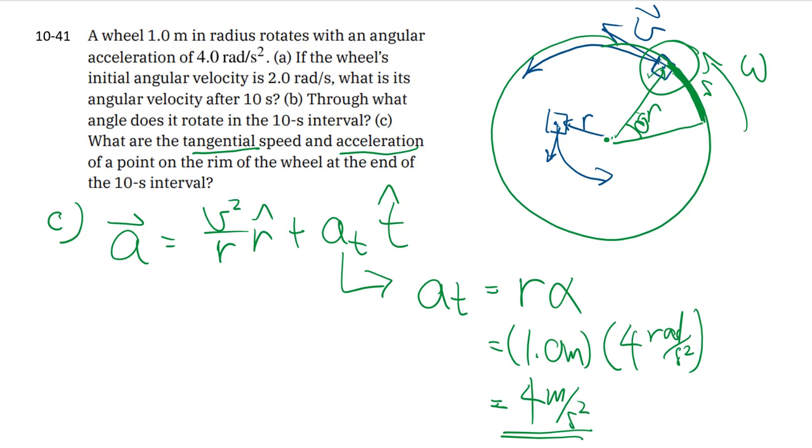So hopefully this gives you a nice introduction to rotational kinematics and see how it relates very closely to all the kinematics we know. And then for a particular point in the body, you have V equals R omega, A equals R alpha, to relate the linear motion of a particular point with all these angular quantities.